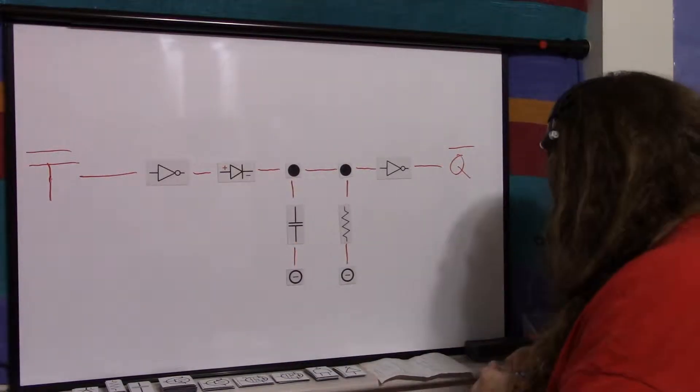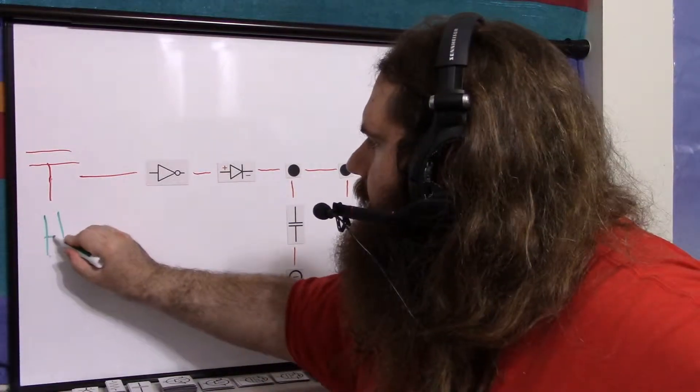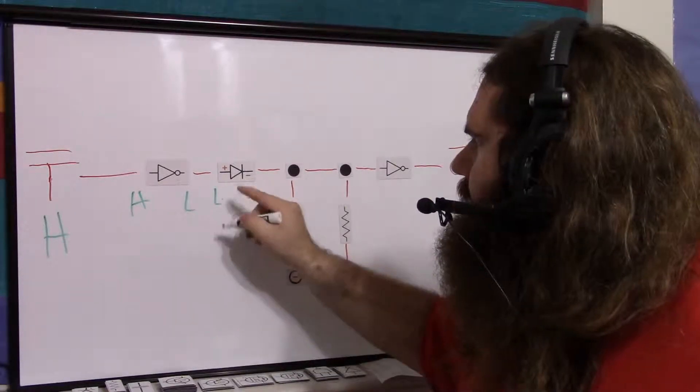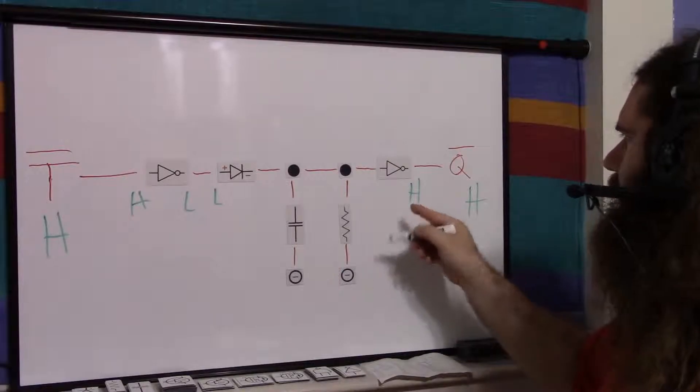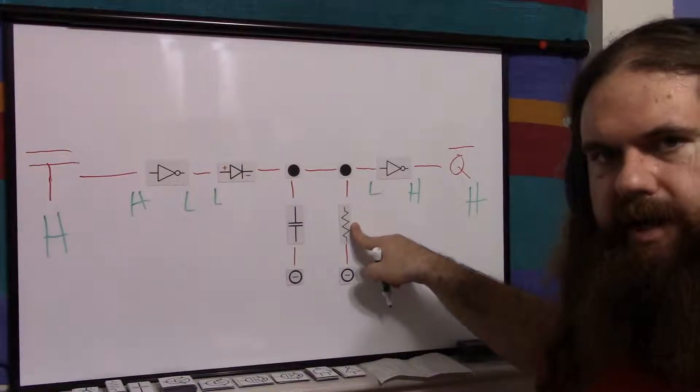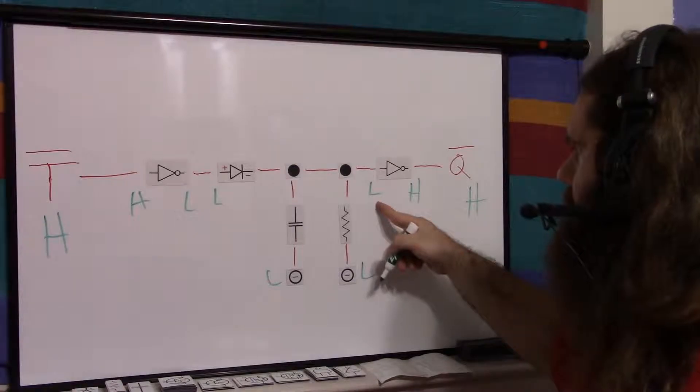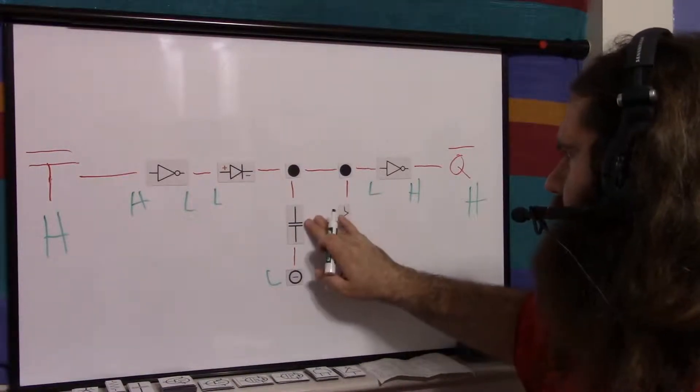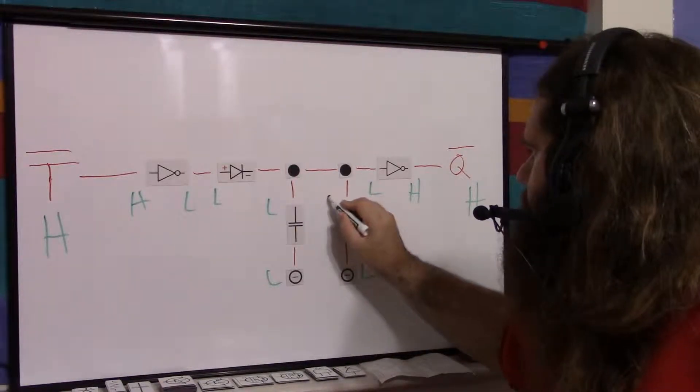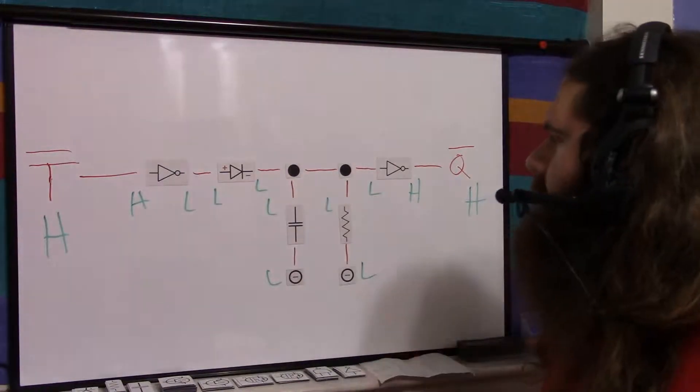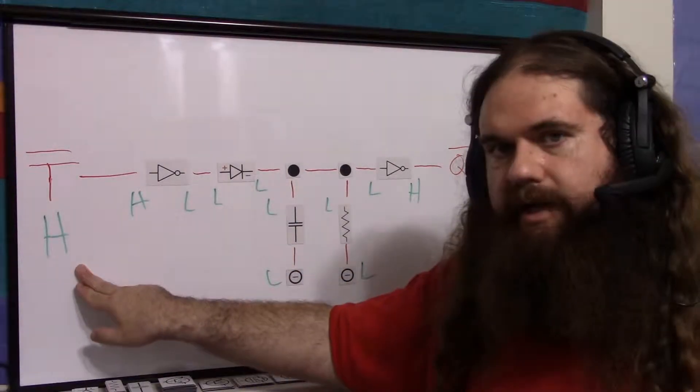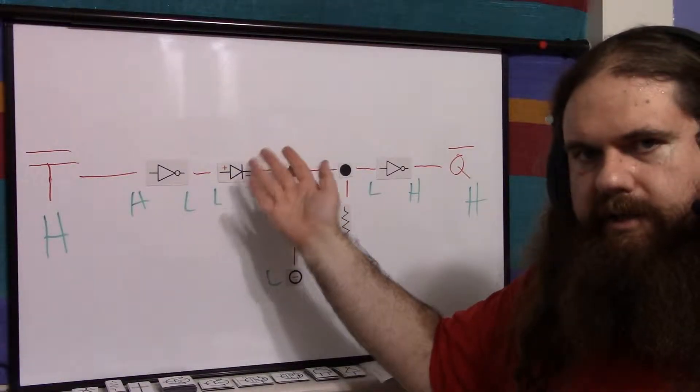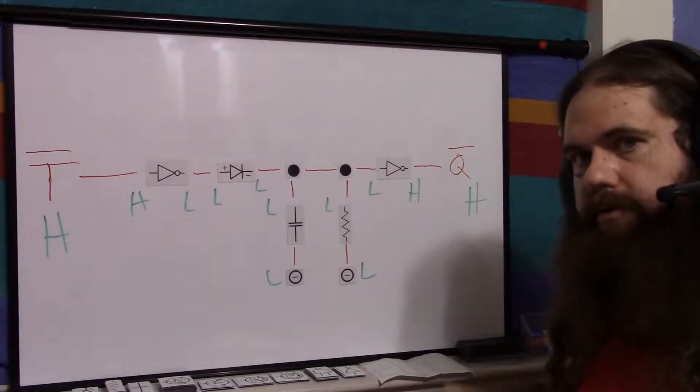So when everything is inactive, your trigger here is high, because it's off. Your output is going to be high. So you've got a high going in here, into this inverter. So that means low, high on this side, low on the other. So you've got low going into this diode. And then over here on this side of the inverter, we've got high, which means low has to be over here, which means this resistor must not have a voltage drop. So if we have low going into this inverter, that means there's no voltage drop here. So there must be no current going through here, which means the capacitor must be discharged.